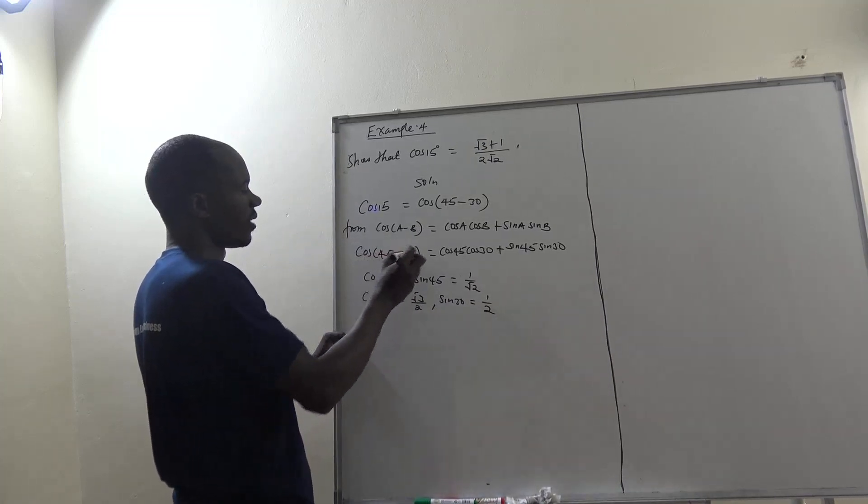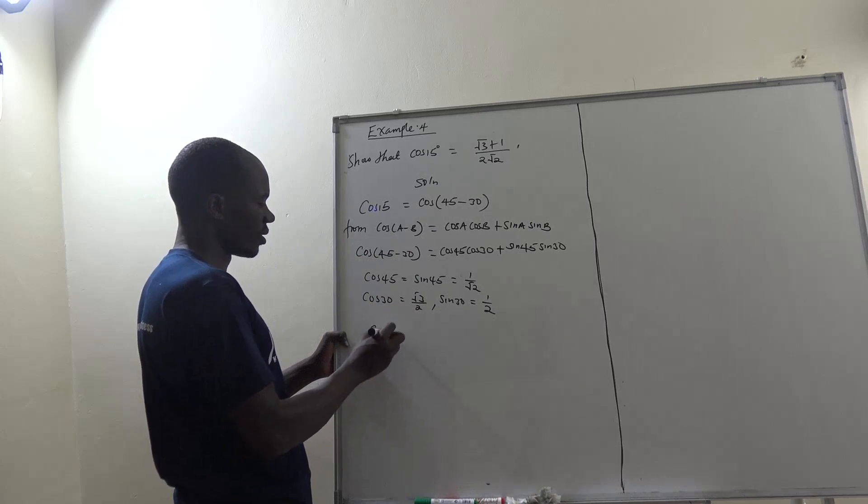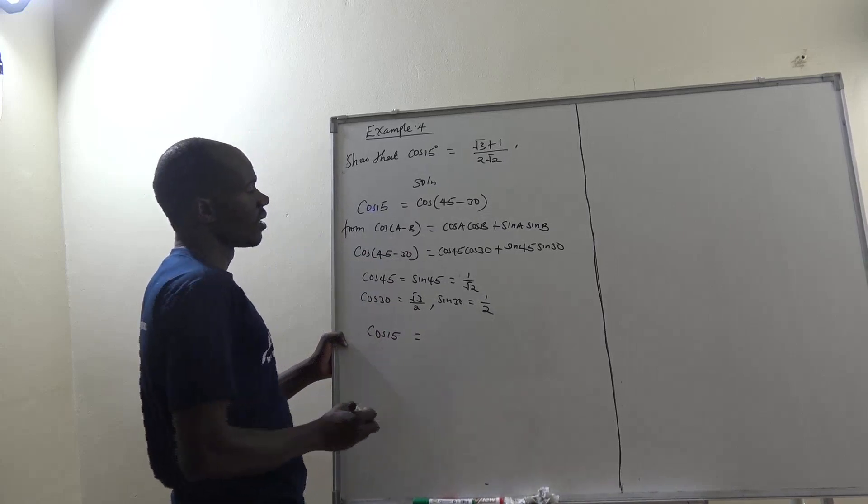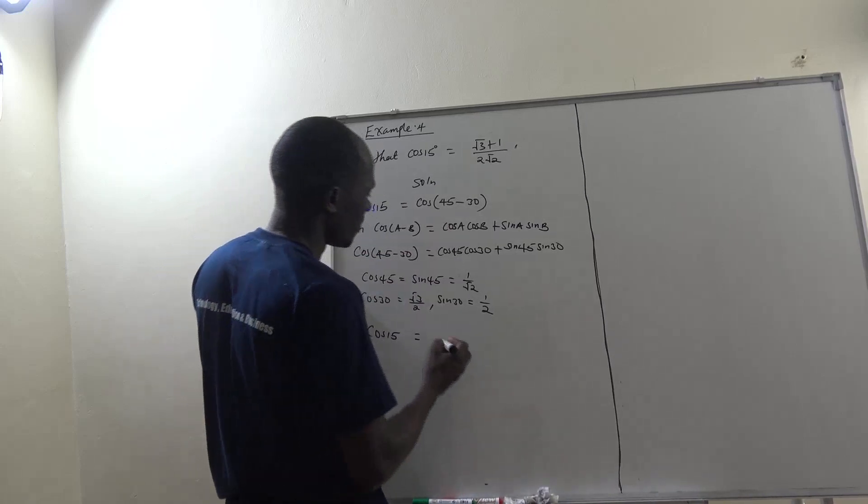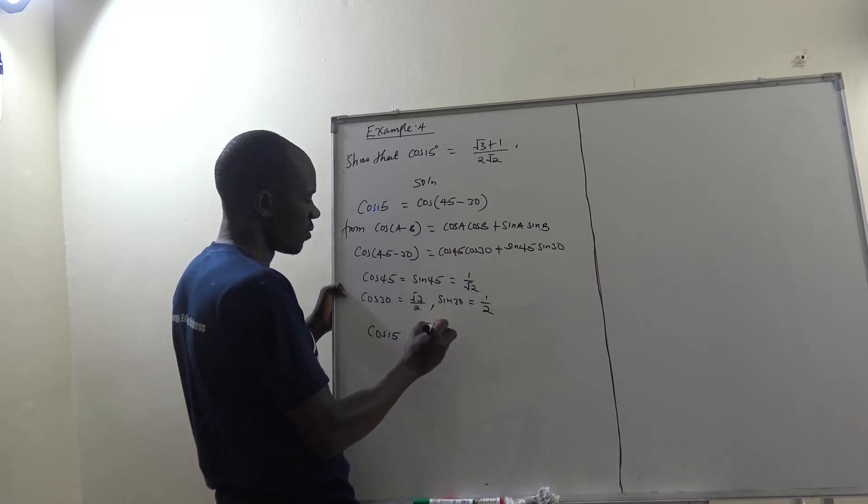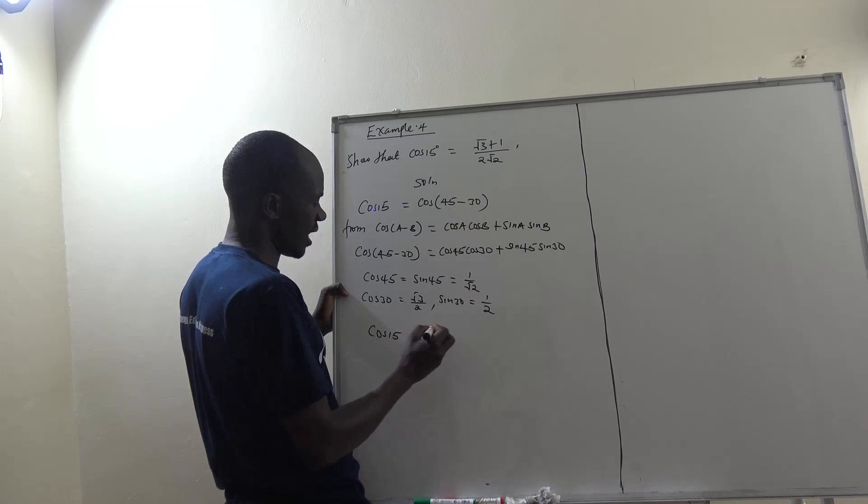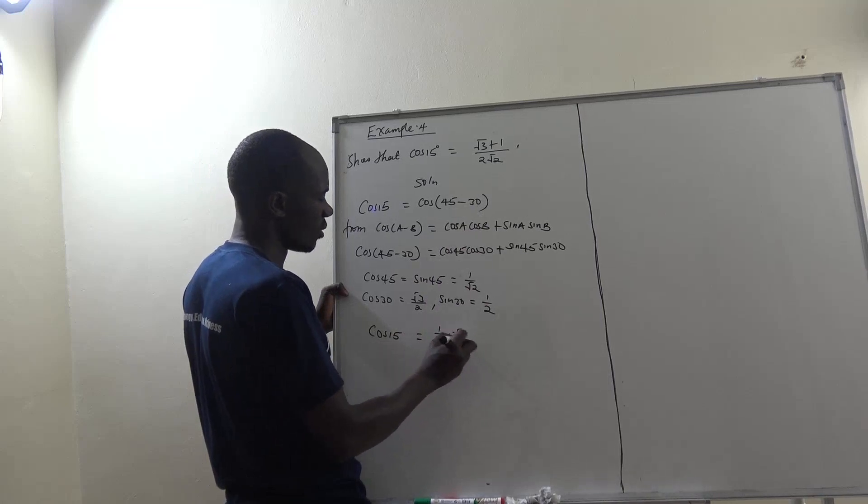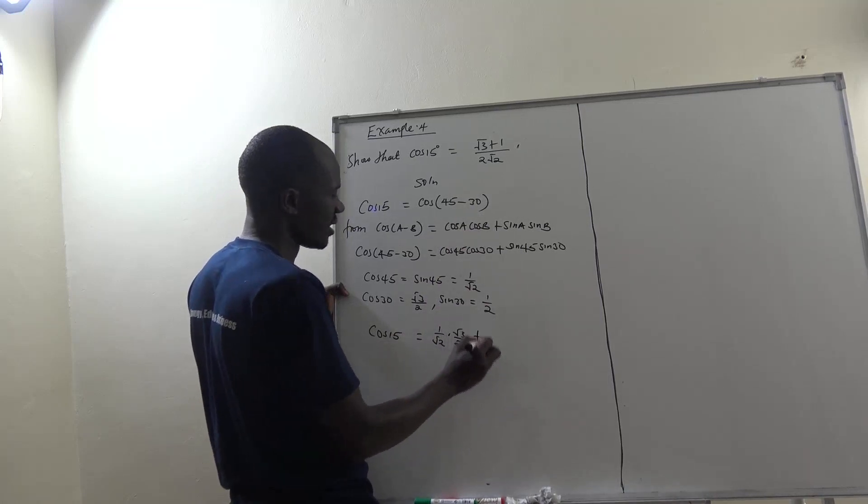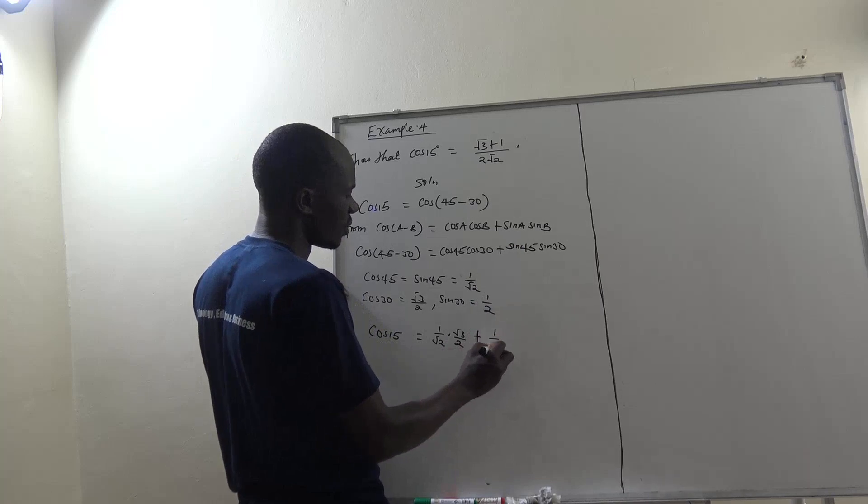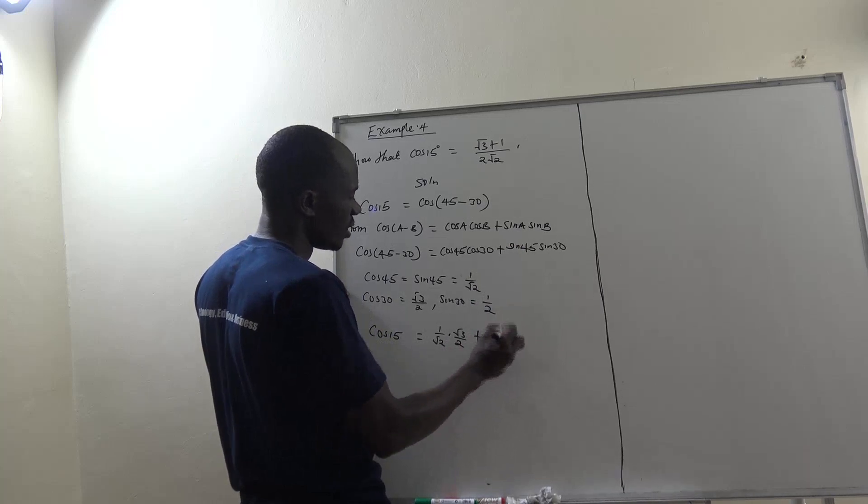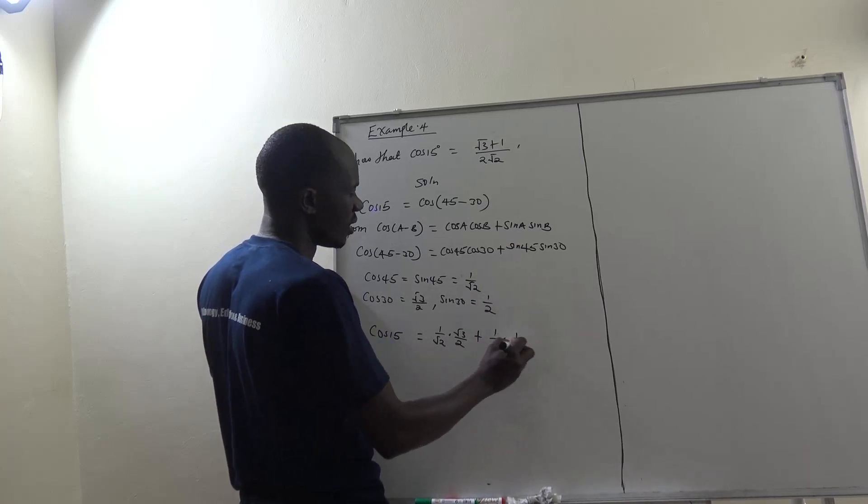So cos 45 is 1 over root 2 times cos of 30, plus sin 45 is 1 over root 2 times sin of 30, which is 1 over 2.